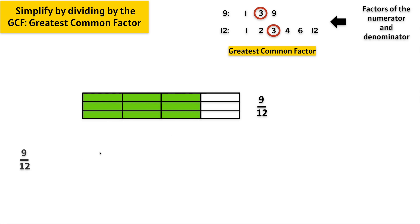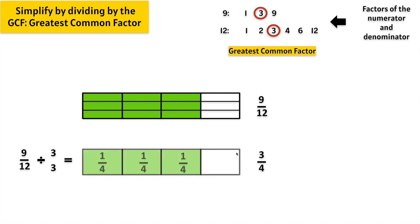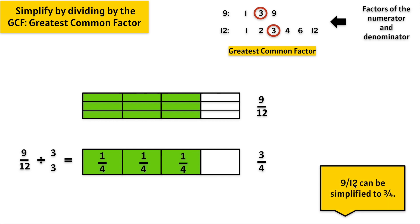Let's take 9 twelfths and divide by the greatest common factor, which is 3. We will divide the numerator by 3 and the denominator by 3 to find the simplest form. 9 divided by 3 equals 3, and 12 divided by 3 equals 4, which makes 3 fourths. We notice that 9 twelfths and 3 fourths are equivalent, and 3 fourths is the simplest form of 9 twelfths. Let's say it together: 9 twelfths can be simplified to 3 fourths.